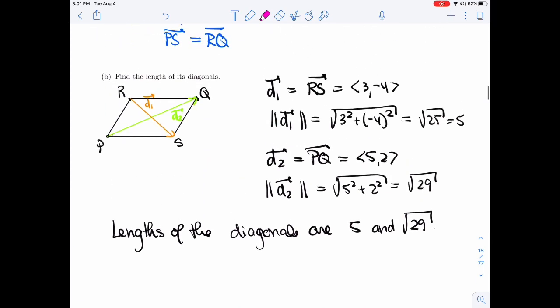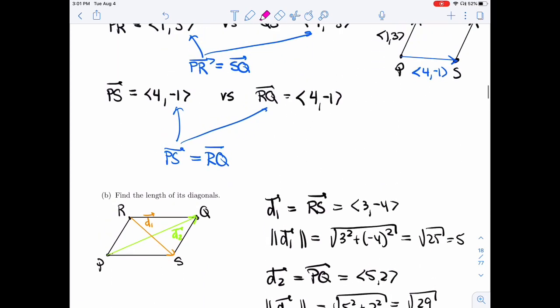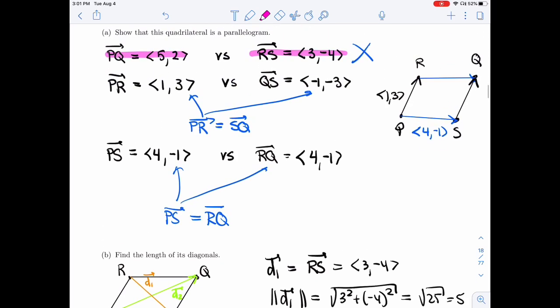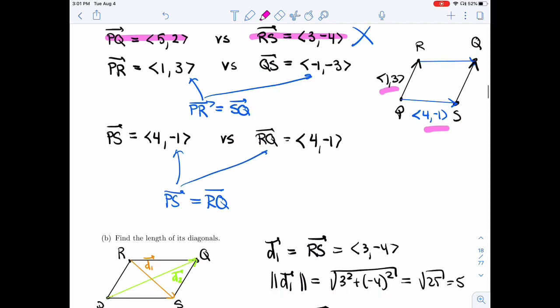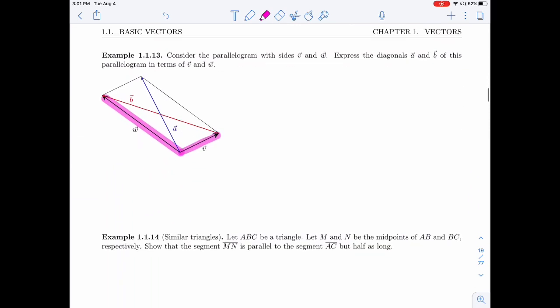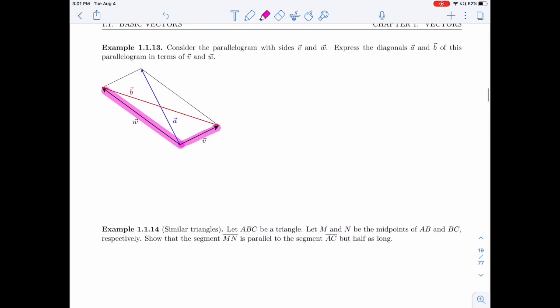In the last example, we were asked to find the length of the diagonals and we just used the fact that we knew the points. But I did mention that we could actually get it from these two vectors. We don't actually need to know the precise points where the parallelogram lies. It just depends on the vectors. So that's why we have this example here, just to show you how to do it in that case.